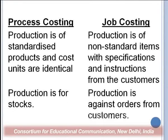In process costing, the production is for stock — you produce in bulk continuously, as in the sugar industry, keep building stock, and supply to buyers as per demand. But in job costing, the production is against specific orders received from customers — you make according to the orders.